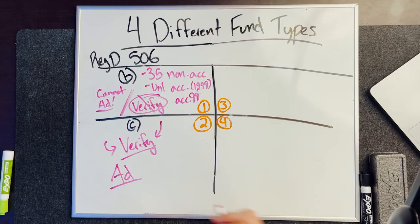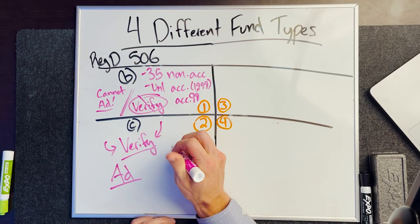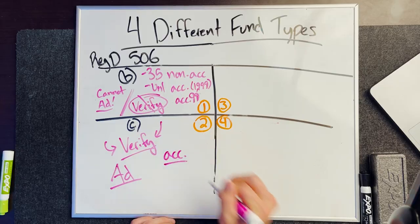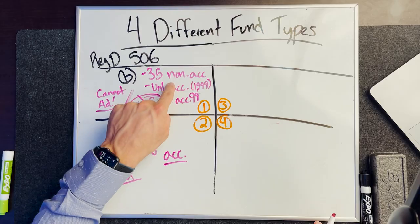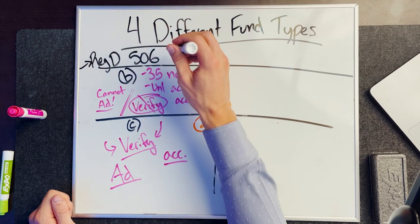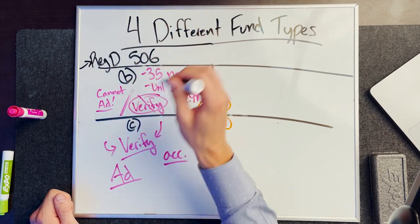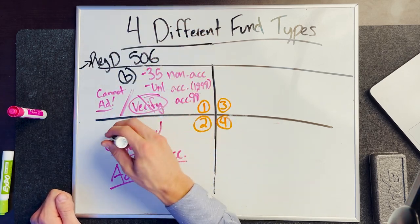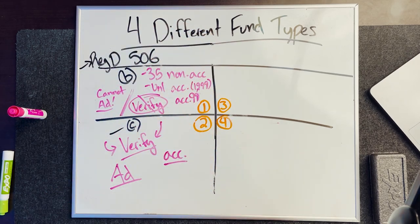In a 506C, all investors have to be accredited or above — there's no non-accredited option like in 506B. But both of these are under Reg D 506B or Reg D 506C. Does that make sense? Are you guys following along so far?